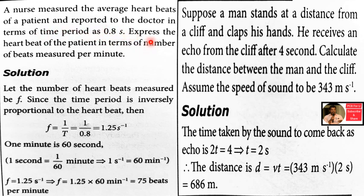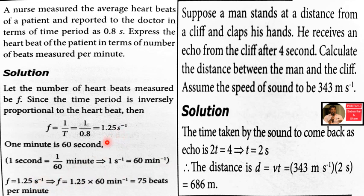The heartbeat period is 0.8 seconds, so frequency equals 1 by 0.8 equals 1.25 Hz. Since one minute is 60 seconds, the heartbeat frequency equals 1.25 into 60, which gives 75 beats per minute.